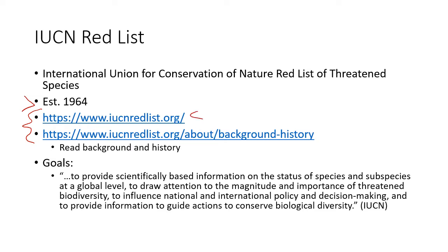I think the IUCN website is really interesting. Type in any species you're interested in — if you're interested in Bengal tigers, type in Bengal tigers and read about their conservation status. The goal of the IUCN Red List is to provide scientifically-based information on the status of species and subspecies at a global level, to draw attention to the magnitude and importance of threatened biodiversity, to influence national and international policy and decision-making, and to provide information to guide actions to conserve biological diversity.